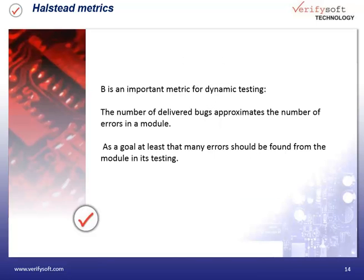The number of delivered bugs, B, is an important metric for dynamic testing. B approximates the number of errors in a module. During testing, you should find as many errors as B indicates.